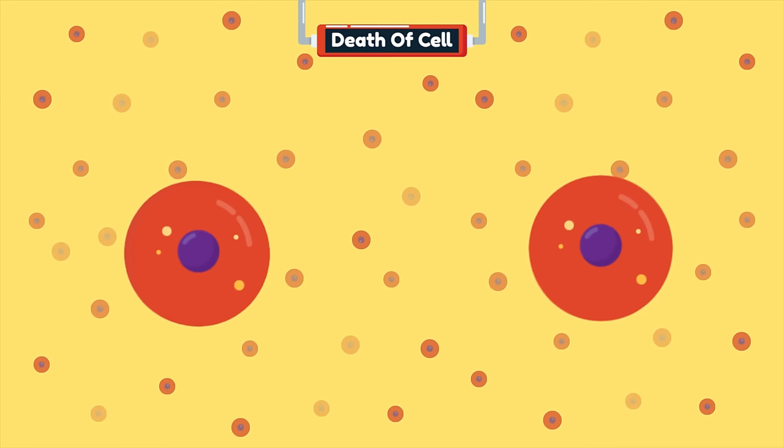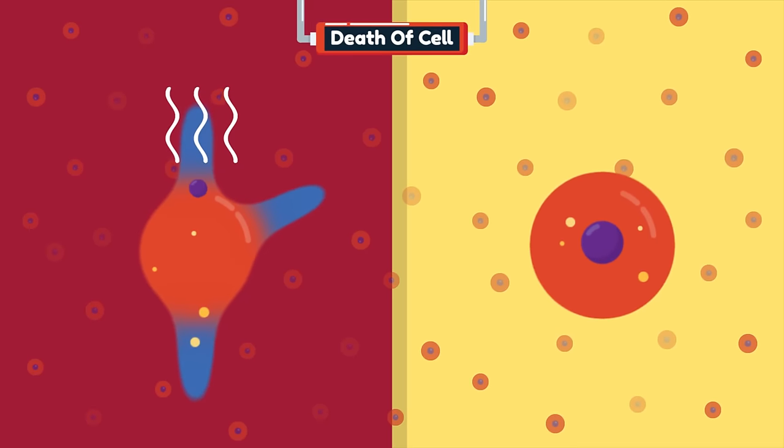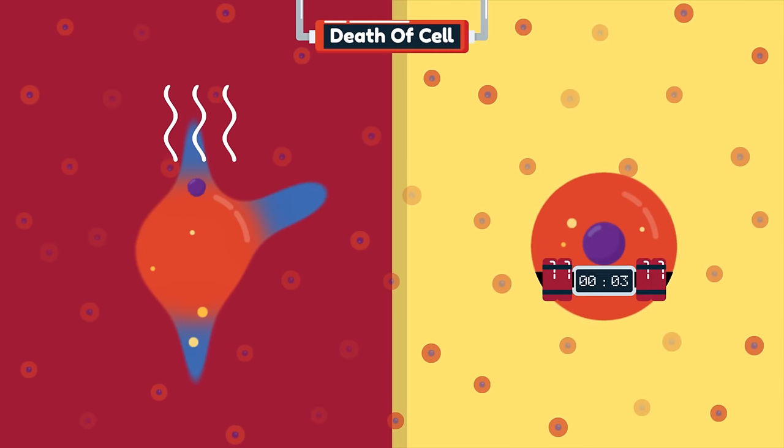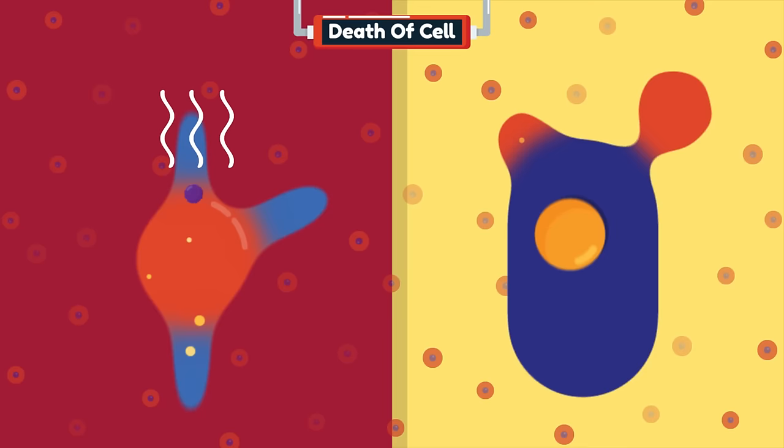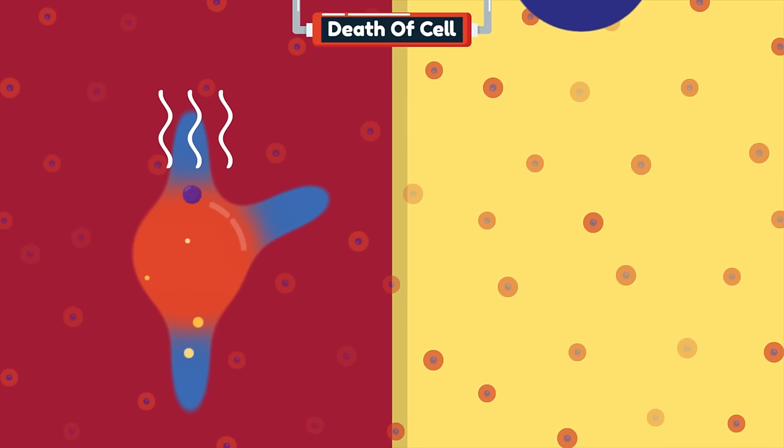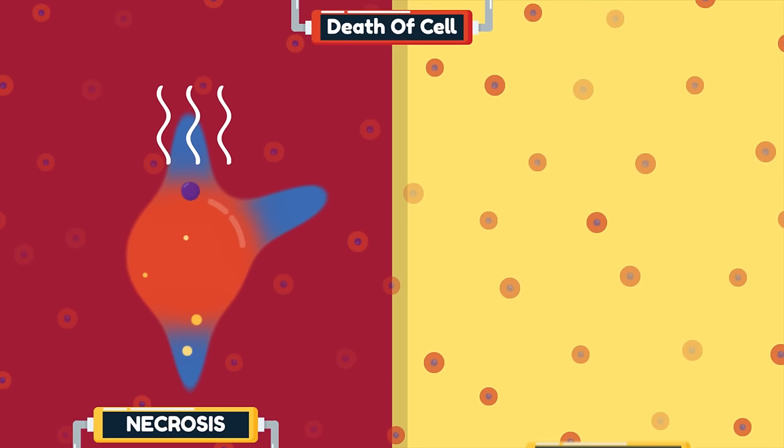There are mainly two types in which a cell undergoes death, either through exposure to harmful environment, injury, or through a pre-planned and regulated process of disintegration. Cell death occurs via two different processes, one being necrosis and the other being apoptosis.